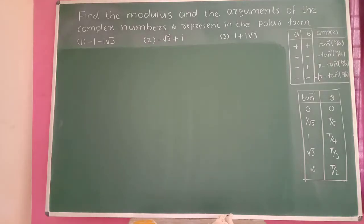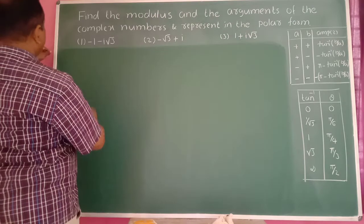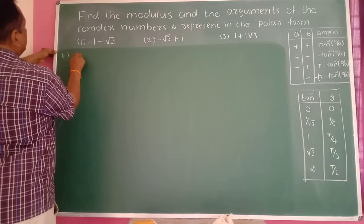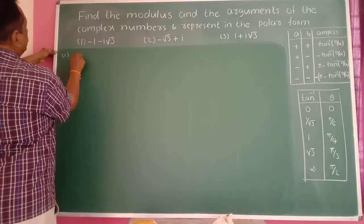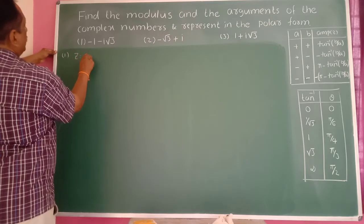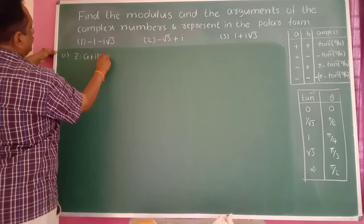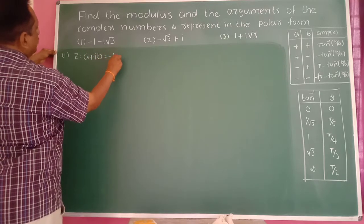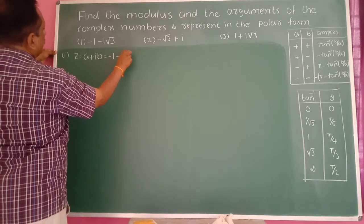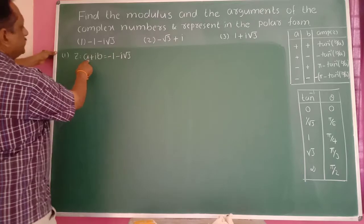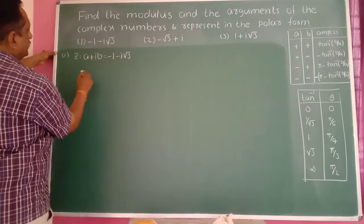So finally, we will find the amplitude and argument of complex numbers. First example: let us consider z is equal to a plus i·b, that is equal to minus 1 minus i·√3. Therefore a is equal to minus 1 and b is equal to minus √3.